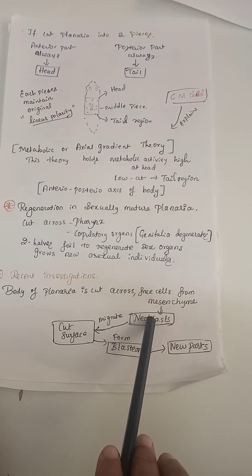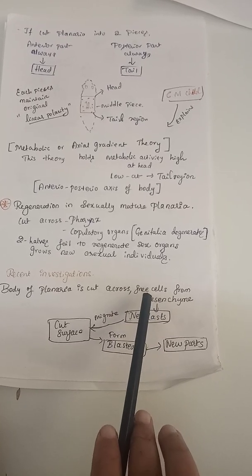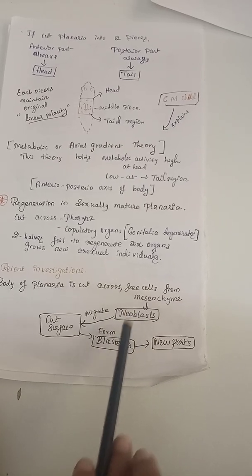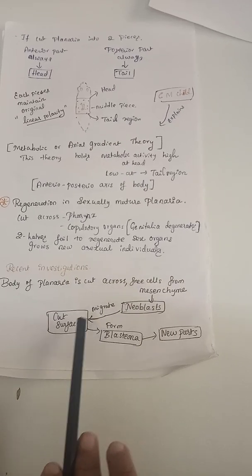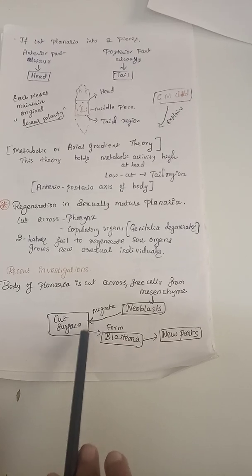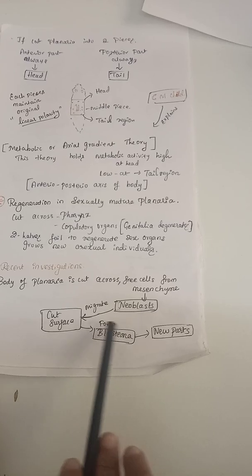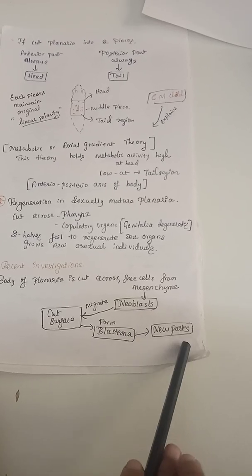They found that free cells from mesenchyme called neoblasts or formative cells migrate towards the cut surface and form blastema. Blastema then develops into new parts.